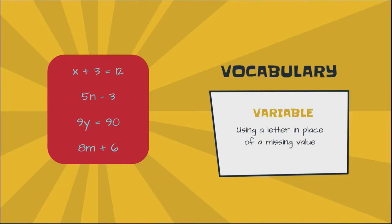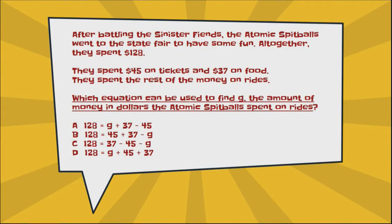Before solving, let's talk about the vocabulary word 'variable.' In math, we use variables in place of a missing value — we use a letter in place of a missing value. That's a huge part of algebra later in your mathematical career. Instead of using blanks or boxes, as we work our way up in math we start to use variables — letters representing unknowns. In our problem, g is a variable meaning the amount of money they will spend on rides.